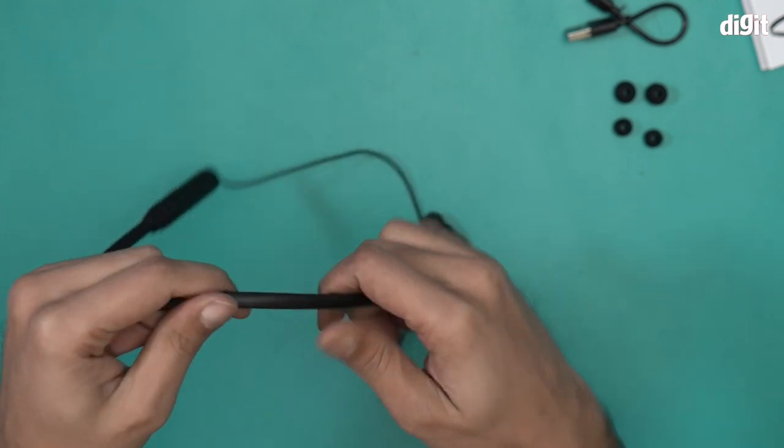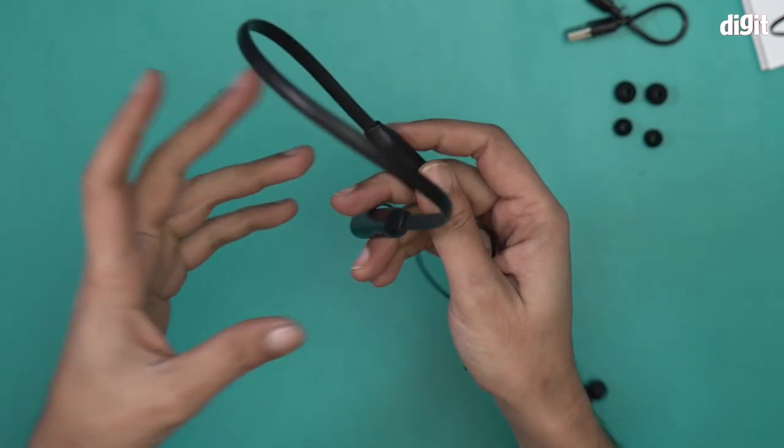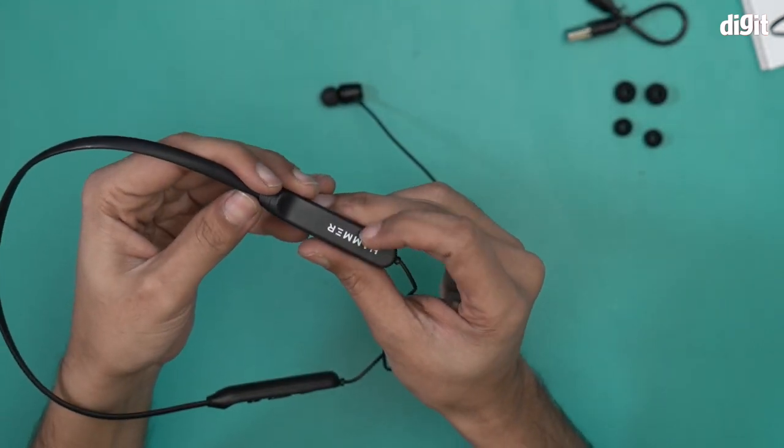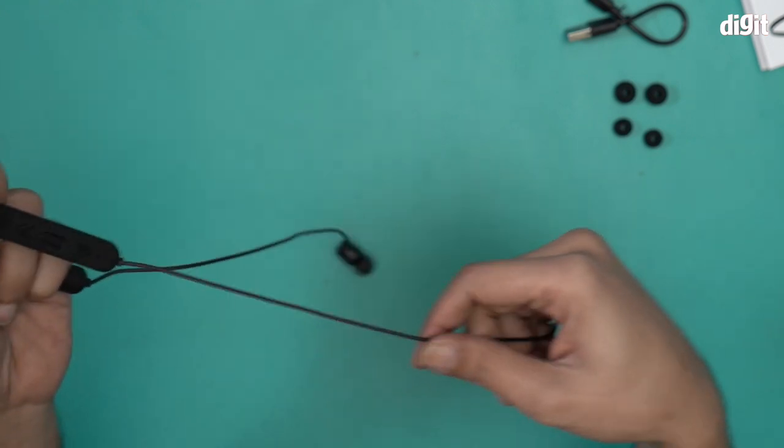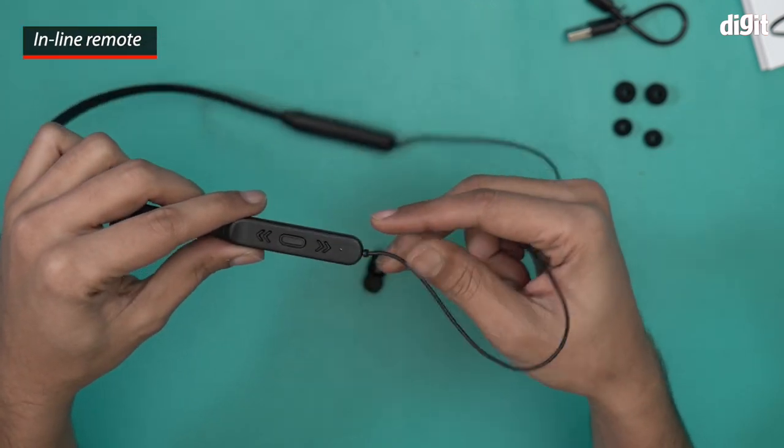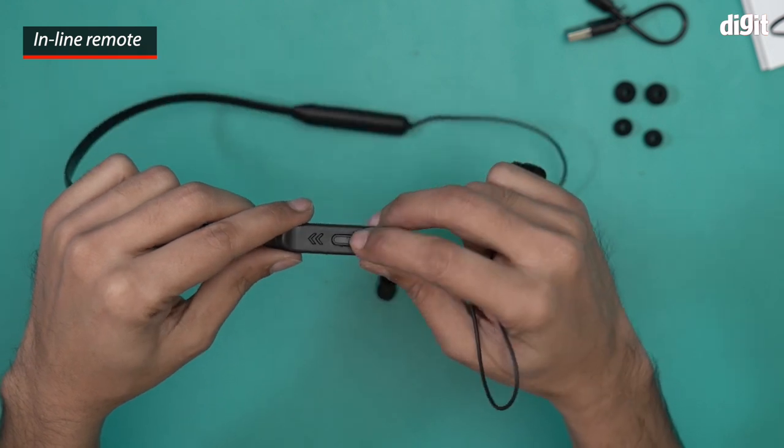There are two modules that come out of it. This is the left one that does not have any controls; it has a Hammer logo over here. This is the left module, and this is the right module. This right module is basically the inline remote for this particular headset.